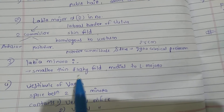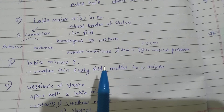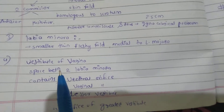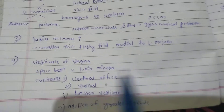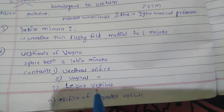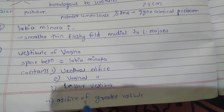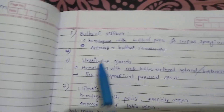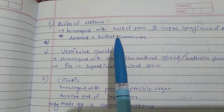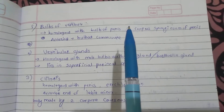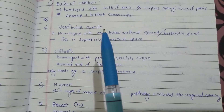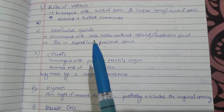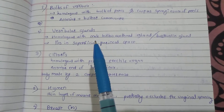The labia minora is a smaller, thin, fleshy fold medial to the labia majora. The vestibule of the vagina is the space between the two labia minora. It contains the urethral orifice, vaginal orifice, lesser vestibular orifice, and orifice of the greater vestibule. The bulb of the vestibule is homologous with the bulb of the penis and the corpus spongiosum of the penis. Anteriorly there is a bulbar commissure. The vestibular gland is homologous with the male bulbo-urethral gland, also known as Bartholin's gland.